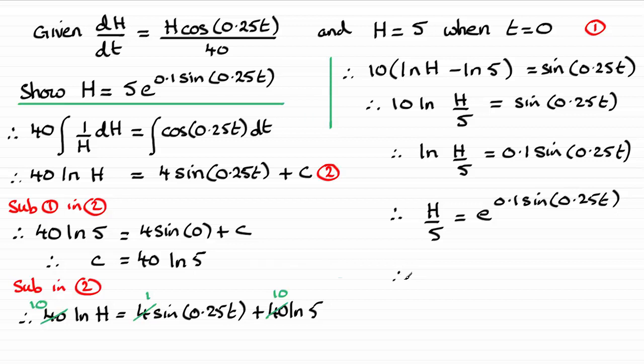You can see we're nearly there now because if I multiply both sides by 5 I end up with the result that we've got to prove that H equals 5 times e to the power 0.1 sine of 0.25t. So I'll just tidy this up. Just border this off down through here. And there you go.